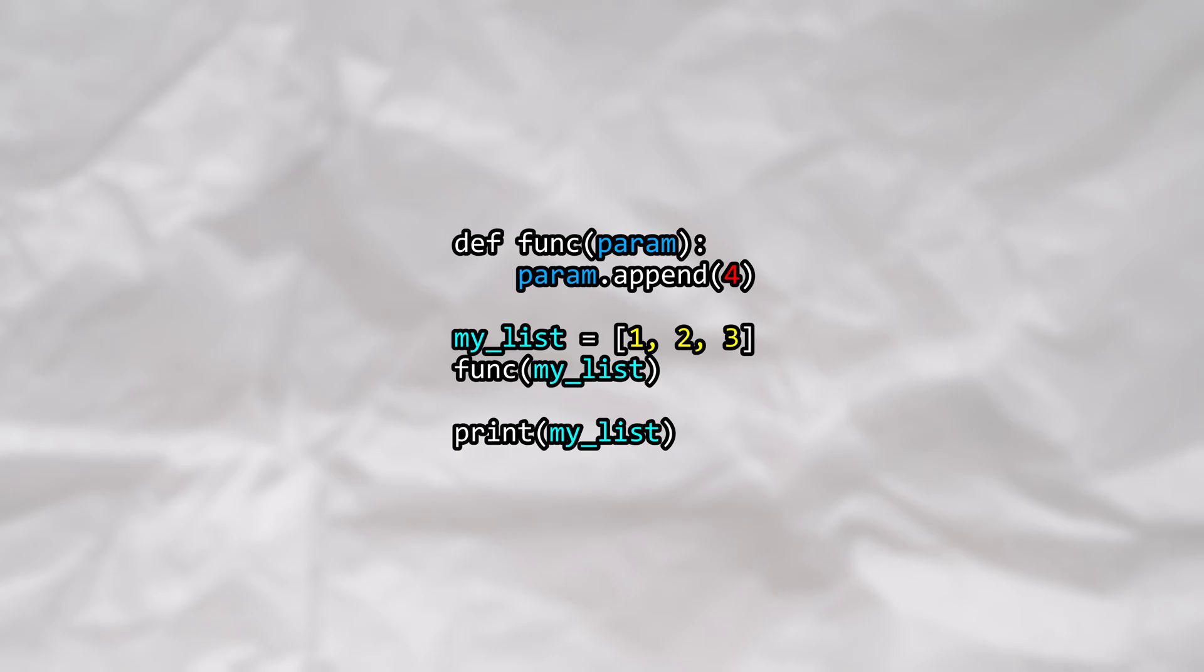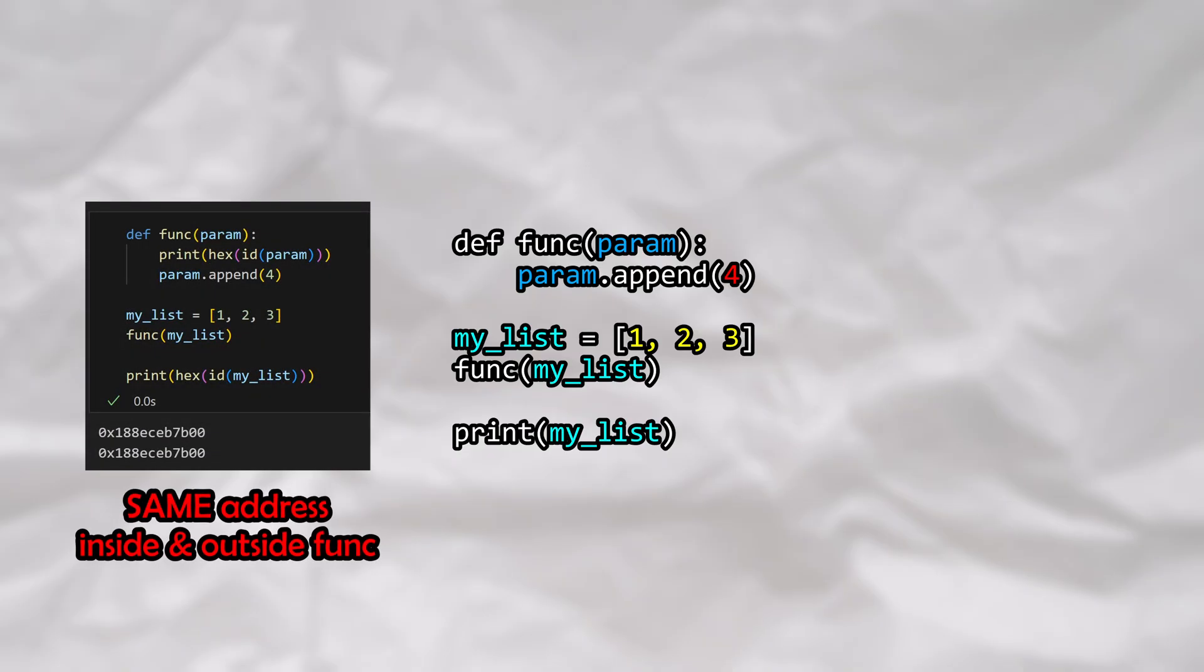Now, when we hand this list to the function, it will receive a reference to the list. If we print the memory address of this parameter within the function, since it references the same object, we can see that it prints the same memory address.